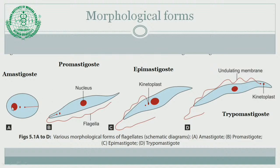You can see here the nucleus and the position of kinetoplast as well as the flagellum. With respect to the position of kinetoplast and nucleus, these morphological forms can be differentiated. Three morphological forms are flagellated and one is aflagellate — it is called the amastigote. The remaining flagellated forms are promastigote, epimastigote, and trypomastigote.